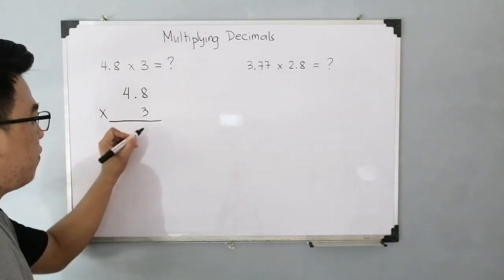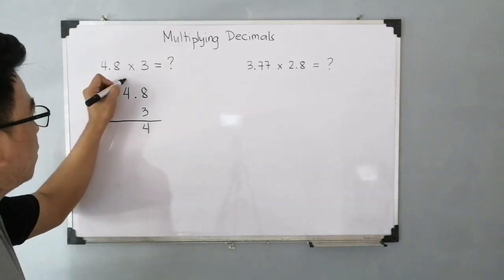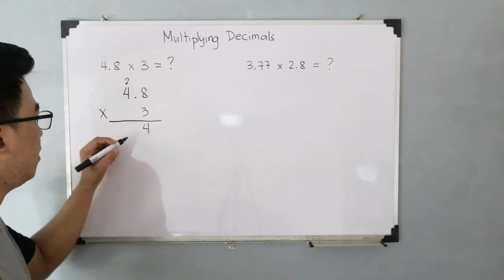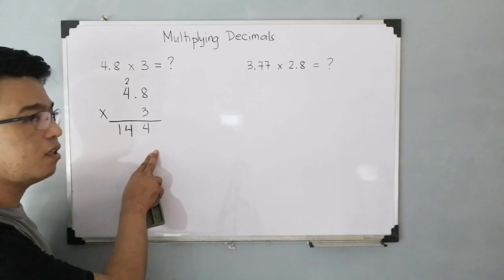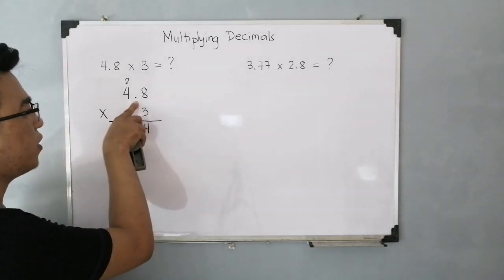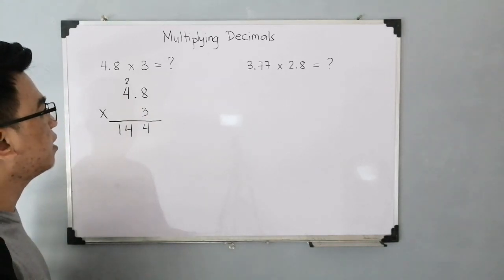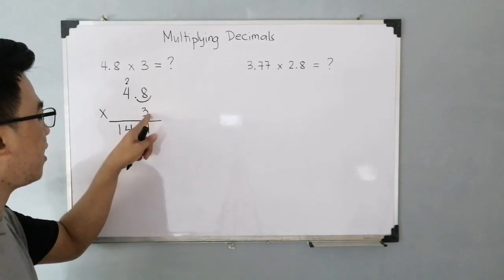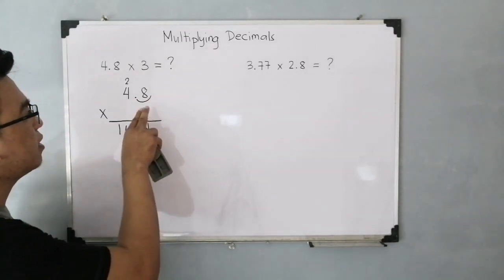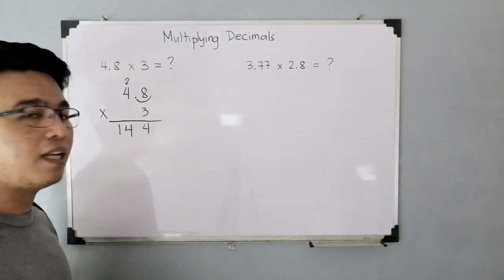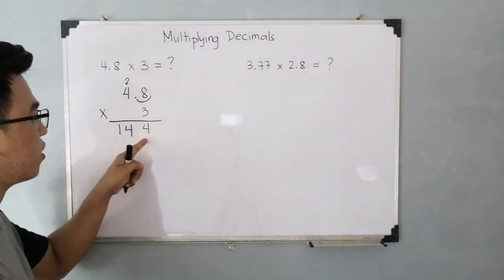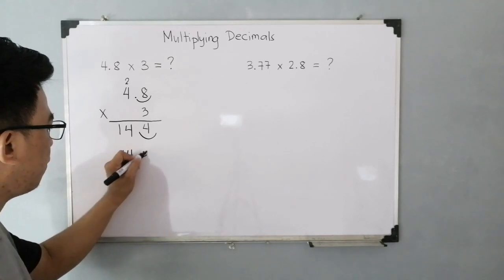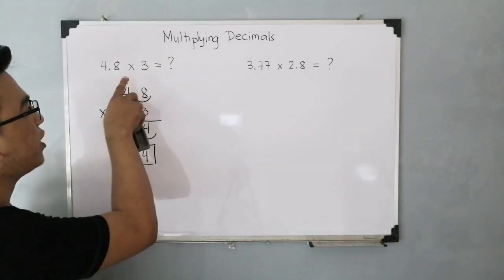So, let's start multiplying 4.8 by 3. 3 times 8, that is 24. So, write down 4 and then carry 2. Right after that, you need to multiply 3 and 4. That is 12. Plus 2. That will give you 14. So, we have here 144. But remember that we have a decimal point. So, count how many decimal places we have in our given example. In 4.8 we have 1 decimal place from here. Count it, 1. But in 3, we don't have a decimal point. Meaning, if we have 1 decimal place in our given expression, automatically, that's the same number of decimal places in our product. So, instead of 144, you have here 1 decimal place. That means the correct answer is 14.4. This is the product of 4.8 times 3.